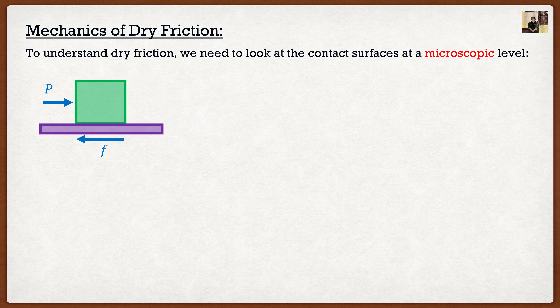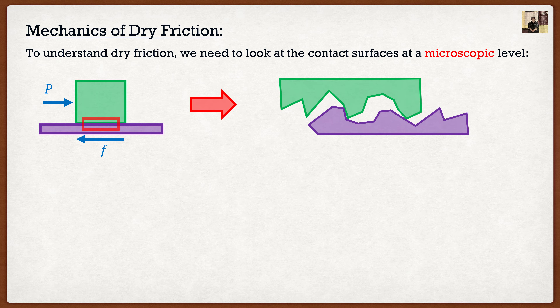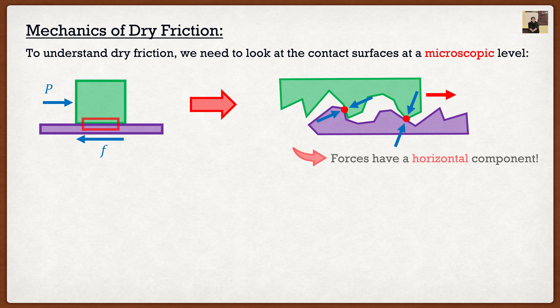But how is this force developed? If I were to take that surface and zoom in on it, the surface isn't actually perfectly smooth — it's actually a little bit rugged. So if I try to take that green surface and pull it across the purple surface, there are going to be many points of contact. At those contact points, a normal force develops. Here's the key: if we split those forces into X and Y components, there is actually a horizontal component to those contact forces. That horizontal component is the frictional force providing the resistance.